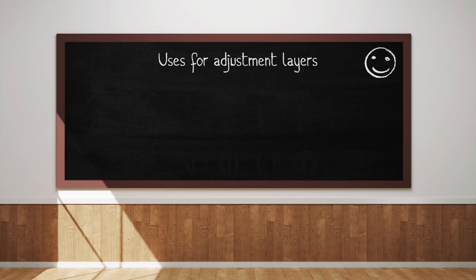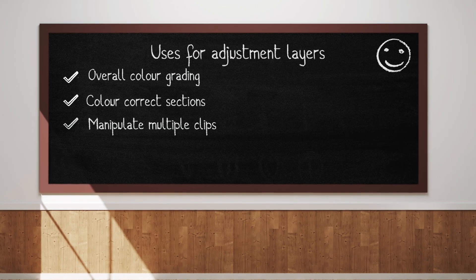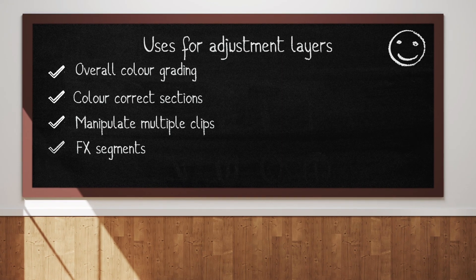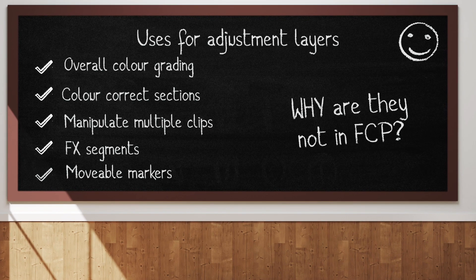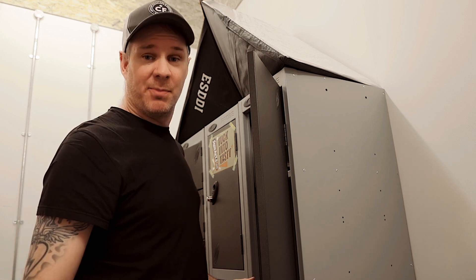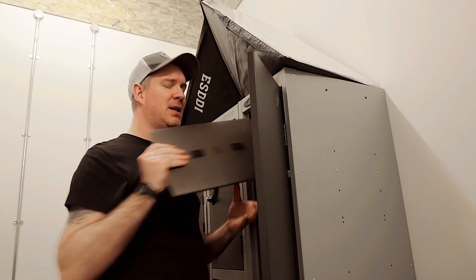Adjustment layers are incredible but they aren't built into Final Cut Pro, and I use them in every single project I create - to color grade a whole film, color correct a section of a video, manipulate a group of clips, or just create an effect segment. You can even use them to create movable markers. There's so much you can do with them, so why aren't they part of the core product? Honestly I don't know, and I'm still surprised every time Apple puts out an update and doesn't include them. It's probably something to do with them not wanting to muddy their magnetic timeline.